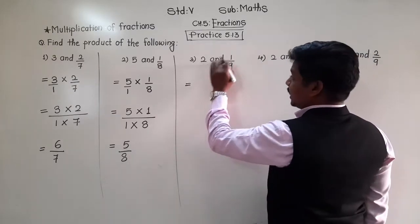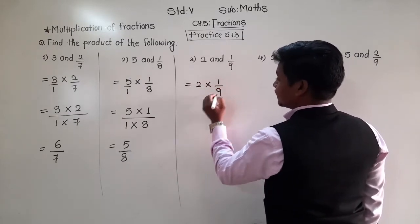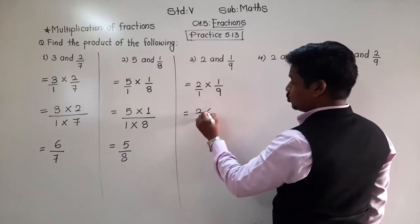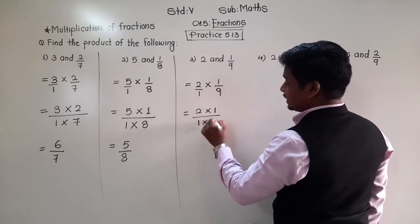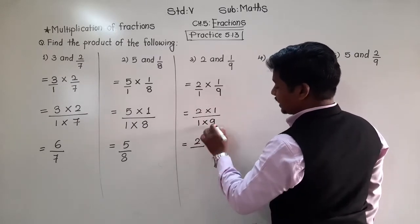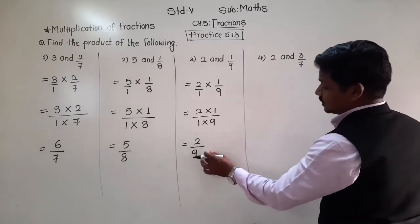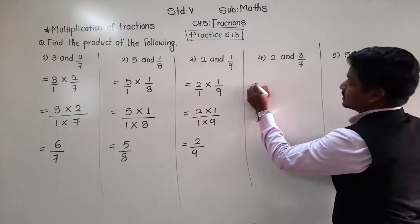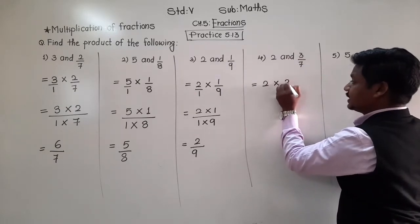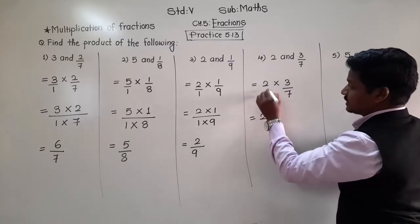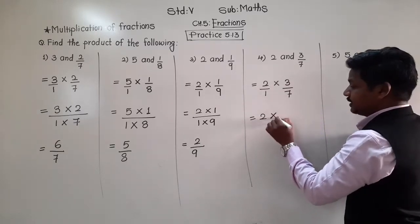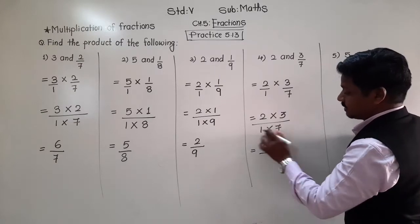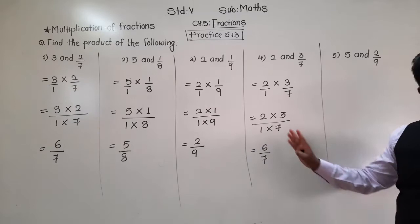Pay attention carefully. Next: 2 multiplied by 1 upon 9. Here, 2 has denominator 1. Multiply numerator with numerator: 2 × 1 = 2, denominator with denominator: 1 × 9 = 9. Answer is 2 upon 9. Are 2 and 9 in any common table? No — so 2 upon 9 is the final answer. Next: 2 multiplied by 3 upon 7. Similarly, 2 has denominator 1. So 2 × 3 = 6 upon 1 × 7 = 7. Six upon 7 is the final answer.